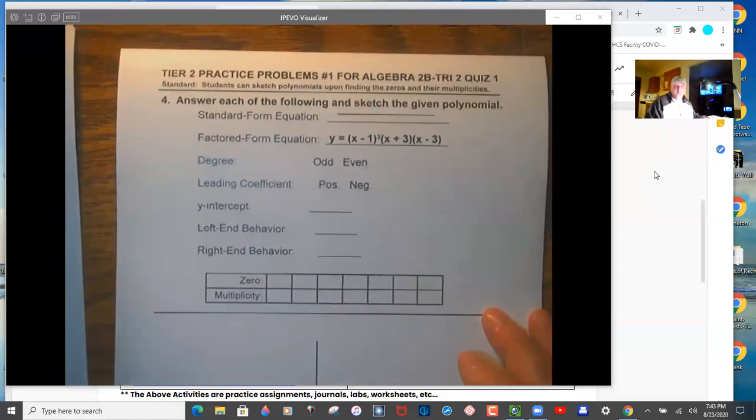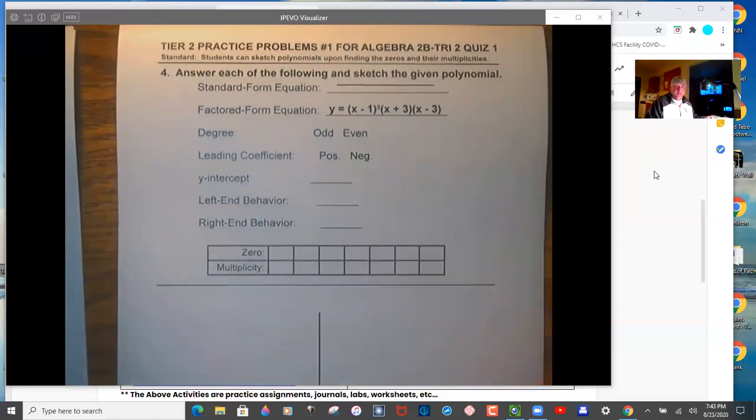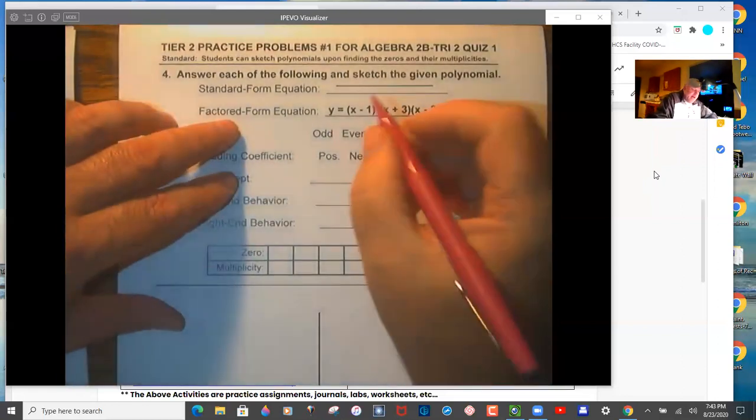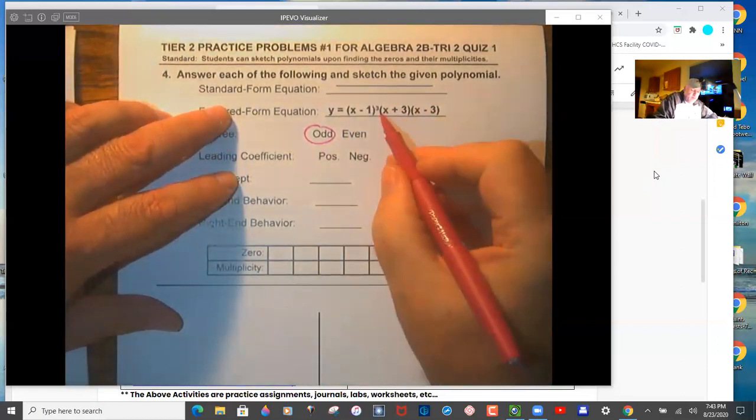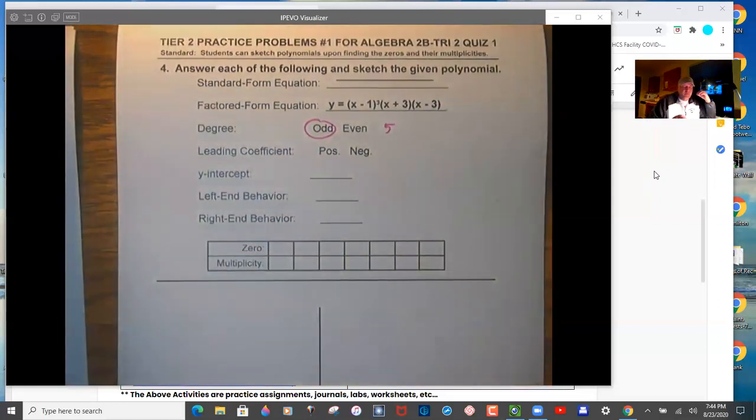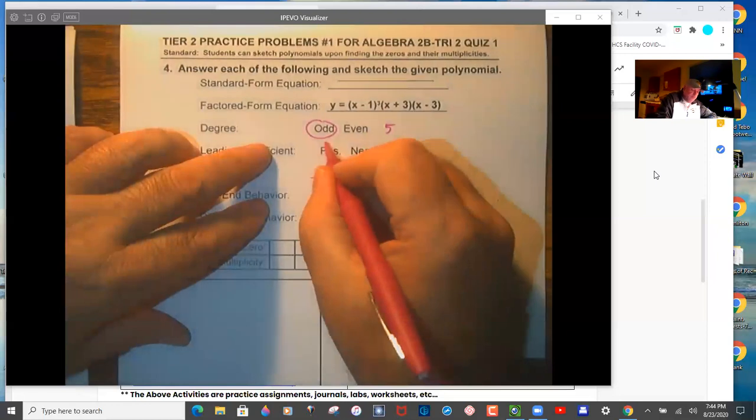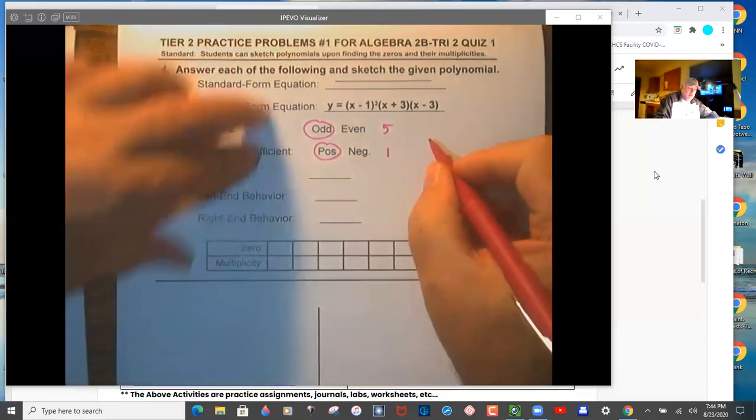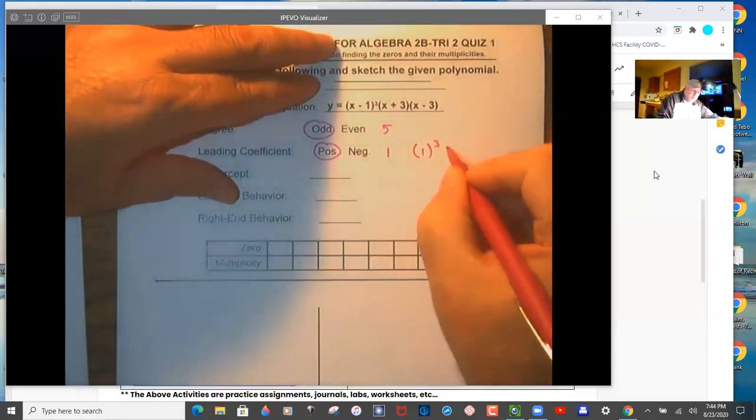Second page, and notice I just flat out blotted out the standard form there. Degree is odd, it's five. So three plus one plus one, it's the added powers outside of the parentheses. Leading coefficient is one. So it's one cubed times one times one.